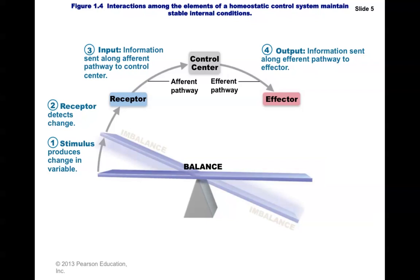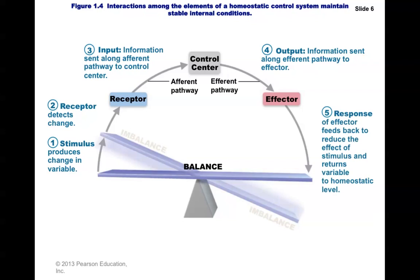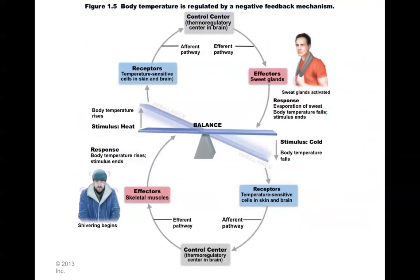One way to remember the difference between these pathways is that the efferent goes to the effector. You could also remember that 'effect,' as opposed to 'affect,' is an end result, an action, or the direct consequence of a change. The response by the effector will bring the variable back into balance and restore everything to a homeostatic level. For temperature, heat stimulus is detected by the skin, and a part of the brain interprets this change and responds by activating sweat glands. The skin can also detect cold, and the brain responds differently — causing shivering until temperature returns to normal.